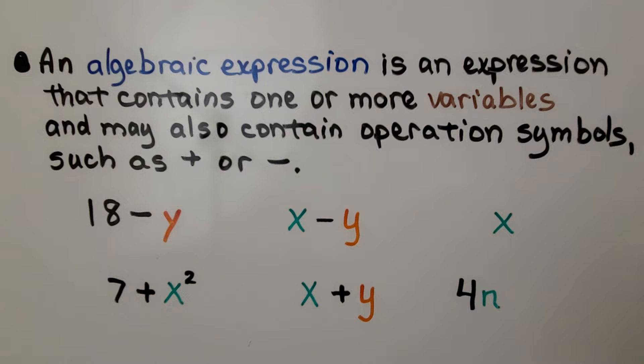An algebraic expression is an expression that contains one or more variables and may also contain operation symbols such as plus or minus. Here we have 18 minus y. Here we have x minus y. Here we have two variables. Here we just have an x. Here we have 7 plus x raised to the second power or x plus y or 4n. And we'll talk about what this means in a second.